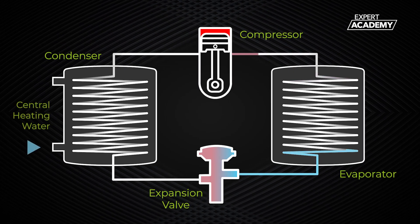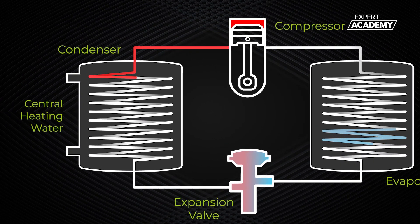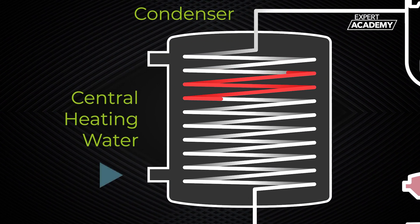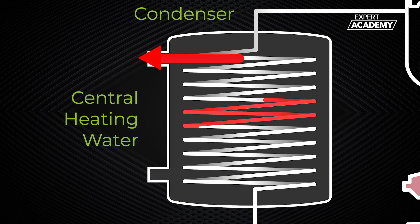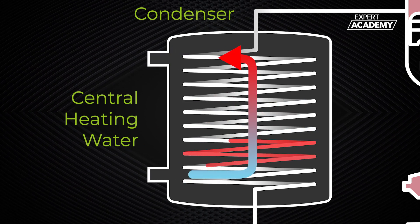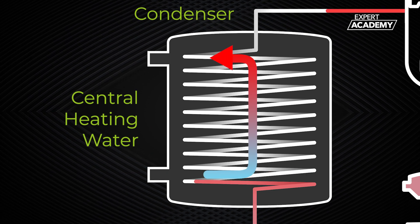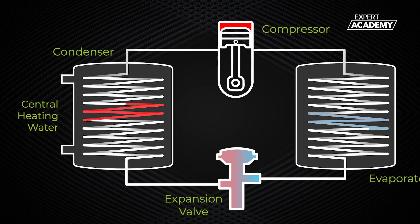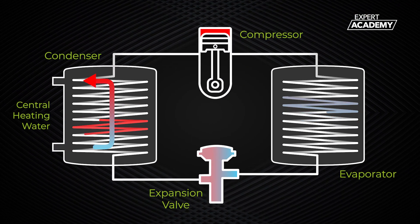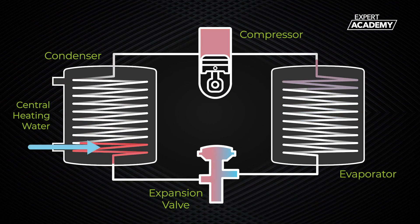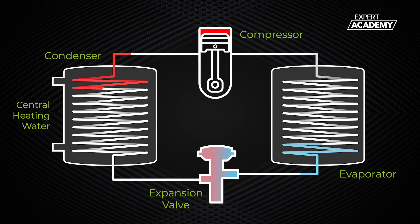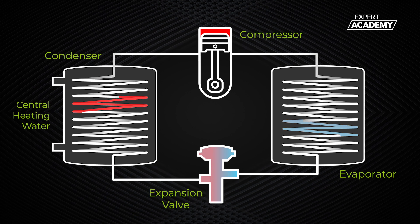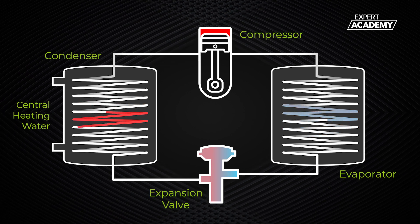We now have a condenser which is essentially a heat exchanger. It has a high temperature, high pressure vapor passing through one side with cooler central heating water passing the opposite way in the other side. As the vapor starts to transfer its heat into the central heating water, it begins to condense. Once it changes state from a vapor to a liquid, it will have released all the heat energy it previously absorbed into the central heating water, which will go around the heating system's pipes and radiators within the house, assisted by a circulator pump. We now have a relatively low temperature, high pressure liquid leaving the condenser.